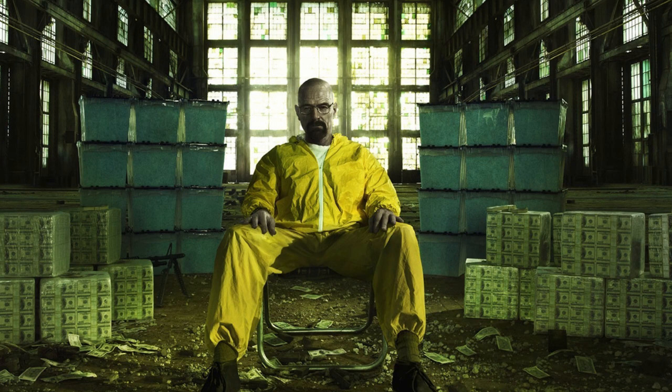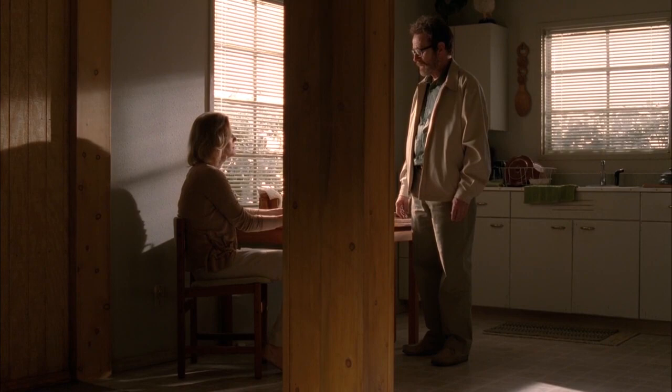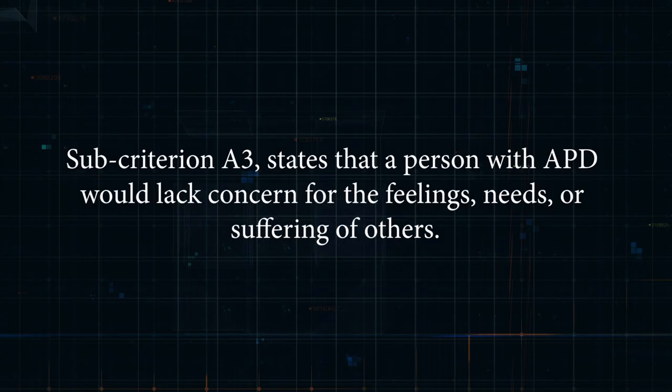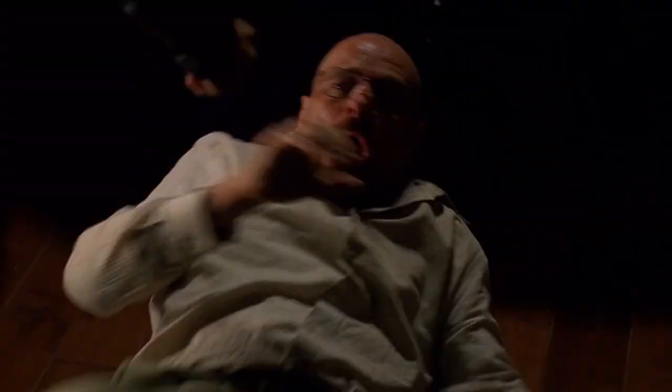We know that ultimately Walt cooked and built his drug empire for himself, and that he believed he was good at producing meth, which was confirmed in his confession to Skyler. Subcriterion A3 states that a person with APD would lack concern for the feelings, needs, or suffering of others, and would also lack remorse after hurting or mistreating others. Walt's lack of concern for Jesse can be observed when he lied about poisoning Brock — Walt felt no remorse about poisoning Brock or lying to Jesse and viewed it as a means to an end. In fact, Walt's lie caused Jesse to question his own sanity and made him feel remorseful for almost killing Walt.